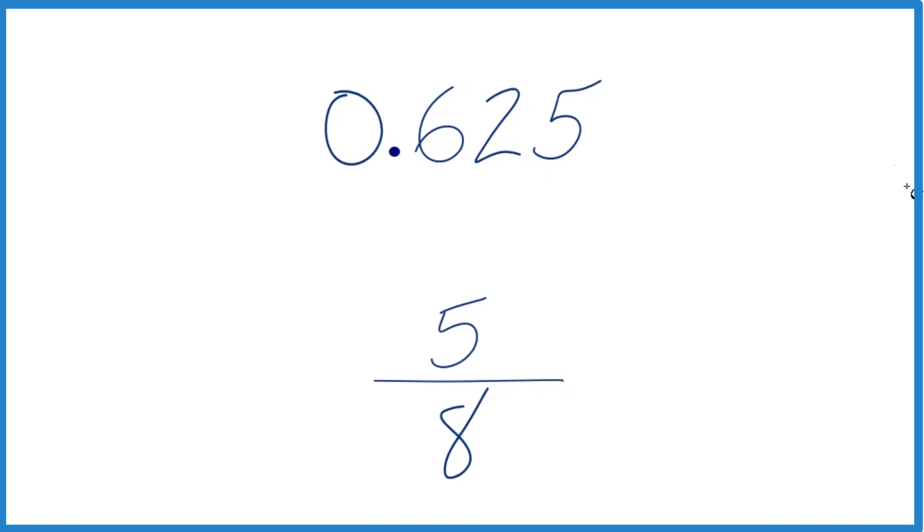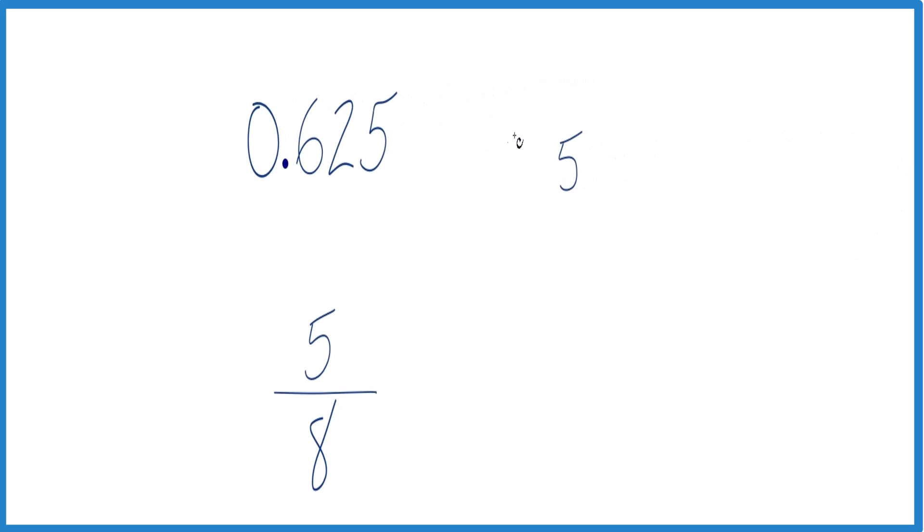We have 5 eighths. So we're going to take 5 and see how many times 8 goes into 5. 8 doesn't go into 5, but we could call this 50 as long as we put a 0 and then a decimal point up here.